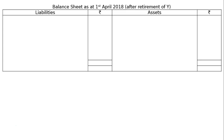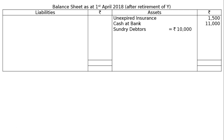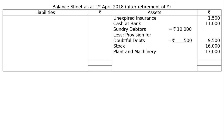Now prepare the balance sheet as at 1st April after retirement of Y. Asset side: unexpired insurance 1,500; cash at bank 11,000; debtors 10,000 less new provision 500 = 9,500; stock 16,000; plant and machinery 17,000; land and building 50,000 + 10,000 = 60,000. Total assets 1,15,000.